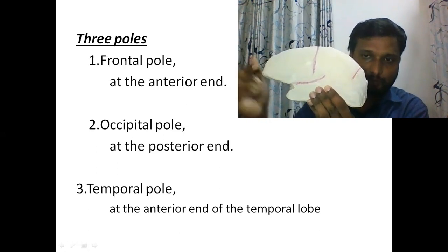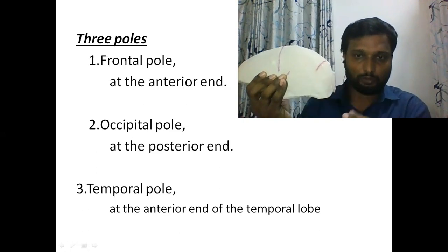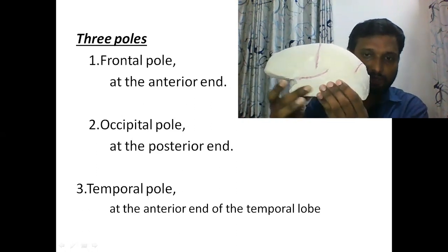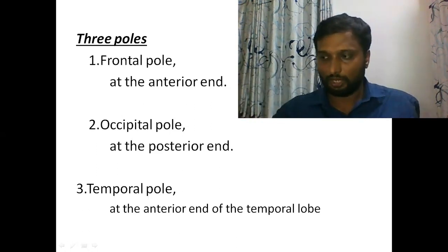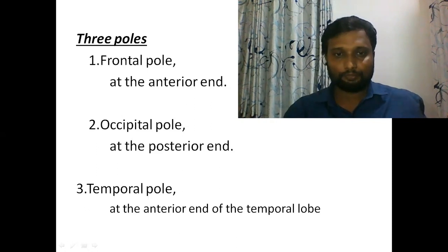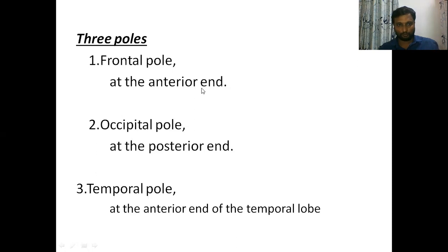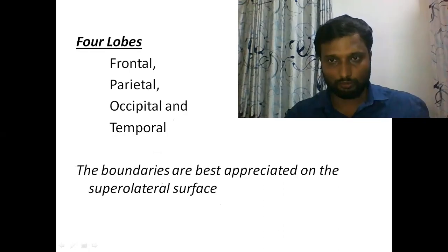So on the supralateral surface we can see the frontal lobe, and the anterior end of the frontal lobe is the frontal pole. The posterior end of the occipital lobe is the occipital pole, and the anterior end of the temporal lobe is the temporal pole. The cerebrum has four lobes: frontal lobe, parietal lobe, occipital lobe, and temporal lobe.